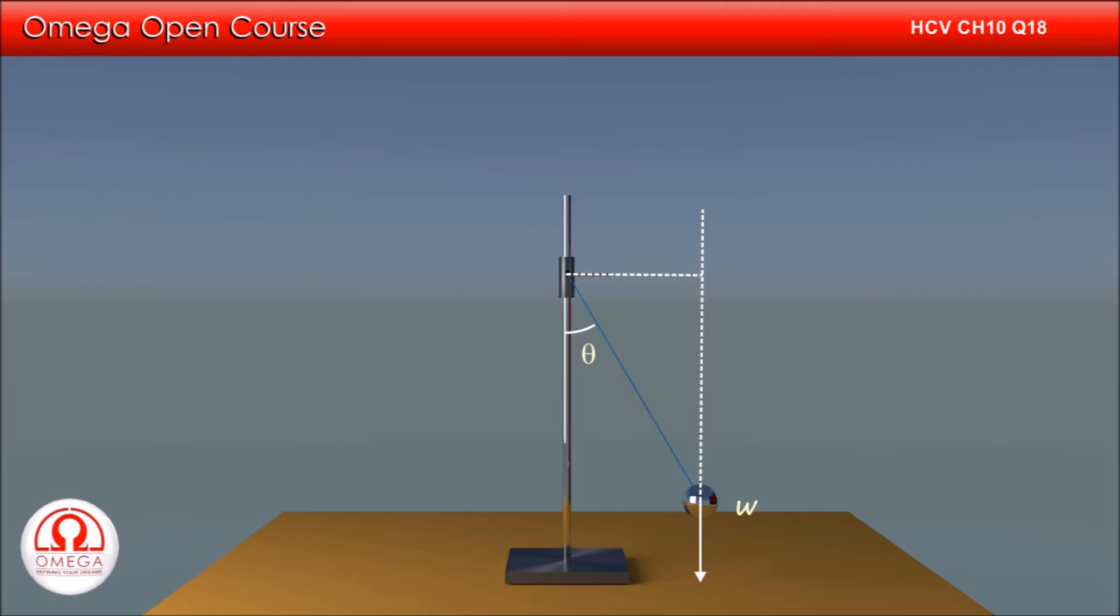Since the string makes an angle theta with the vertical, from geometry we can say that the line of action of force also makes an angle theta with the string. From simple trigonometry, we know that the length of this perpendicular is L sin theta. Thus torque is W into L sin theta.